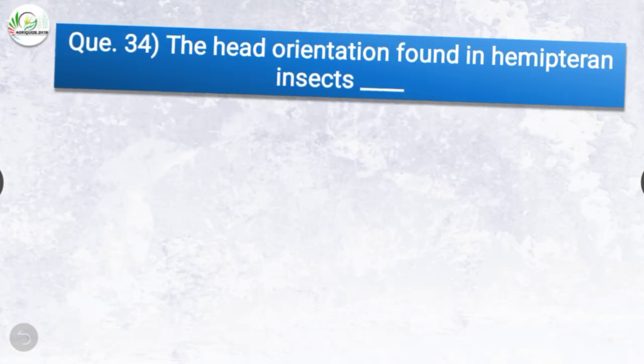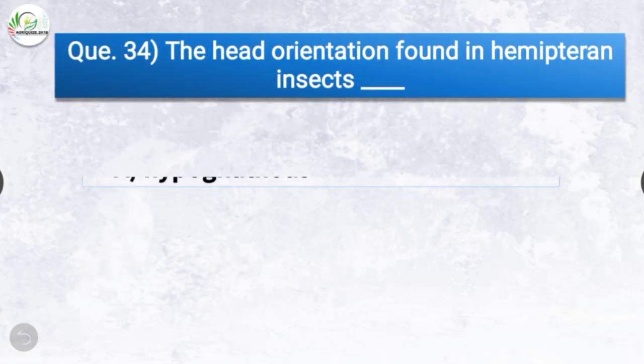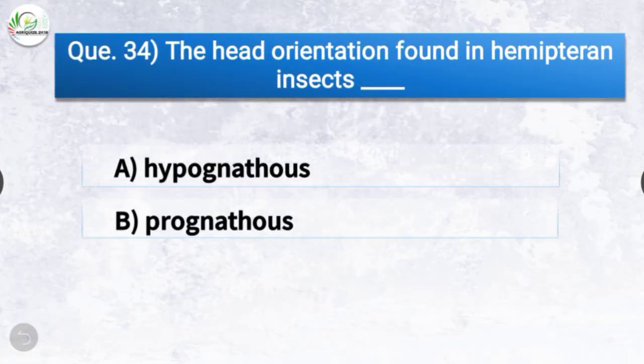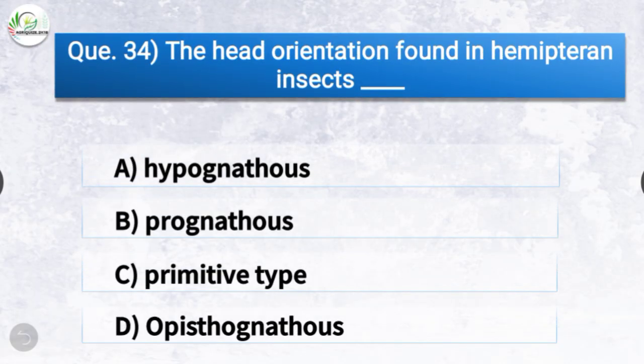Question number thirty-four: The head orientation found in hemipteran insects is dash. The correct answer is option D, opisthognathous — the head orientation found in hemipteran insects is opisthognathous.